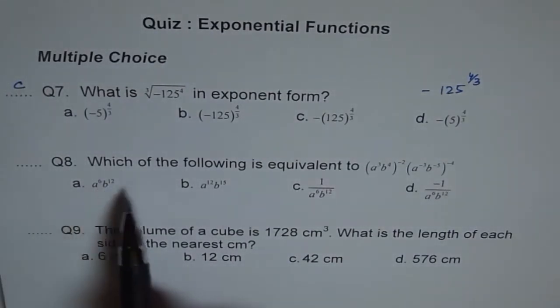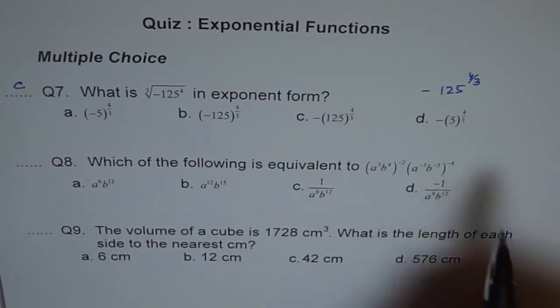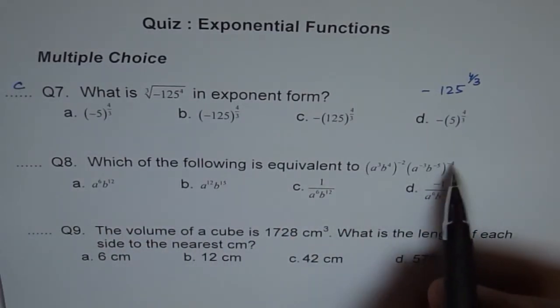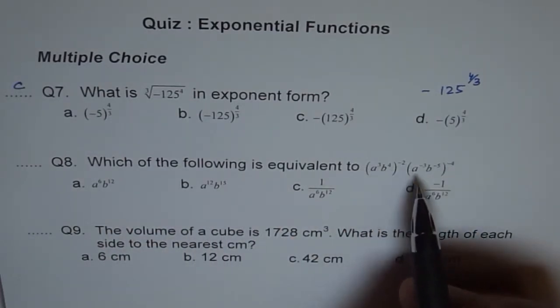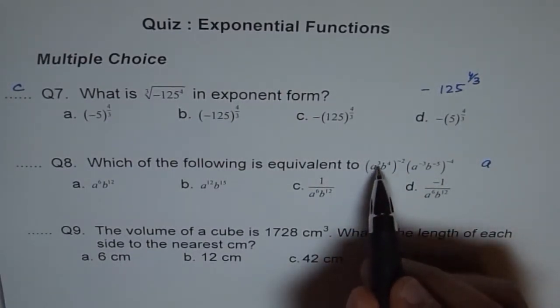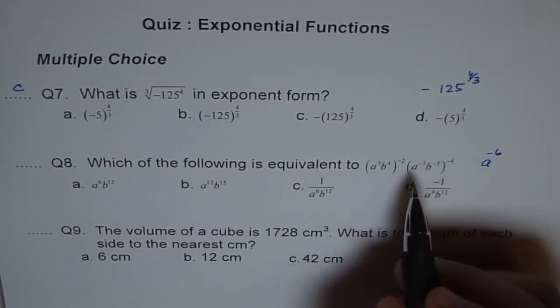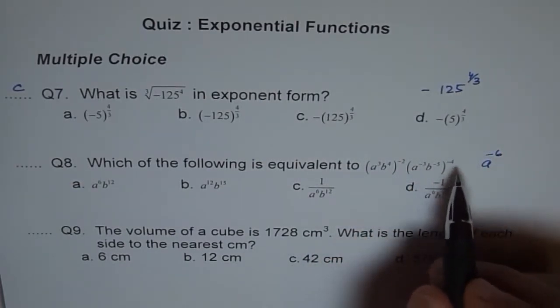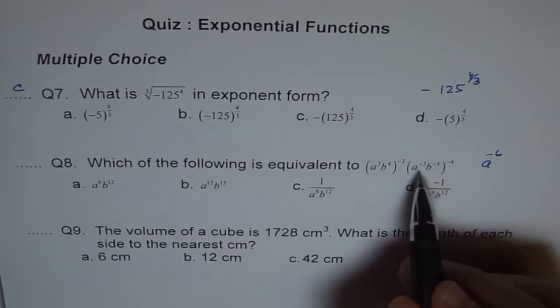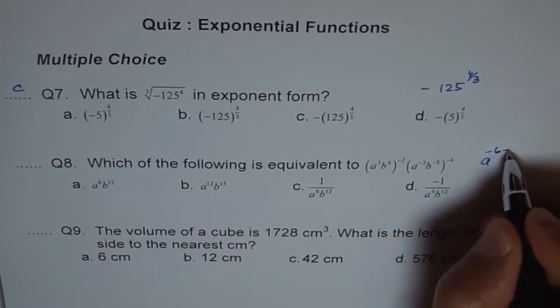Question 8. Which of the following is equivalent to this? So basically we have to write as positive exponents. So here we have a to the power of 3 times minus 2 is minus 6. And then let us see first a's powers. And here a is minus 3 times minus 4 which is plus 12. So let me write plus 12 here.